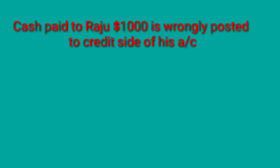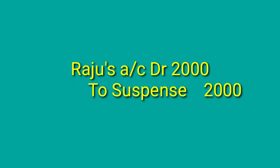Next: cash paid to Raju 1,000 is wrongly posted to the credit side of his account. This is a case of wrong side posting — a one-sided error. Raju's account should have been debited but was wrongly credited. The journal entry will be: Raju's account debit to suspense — 2,000, because we write double the amount: 1,000 to cancel the wrong credit and 1,000 for the corrected debit.